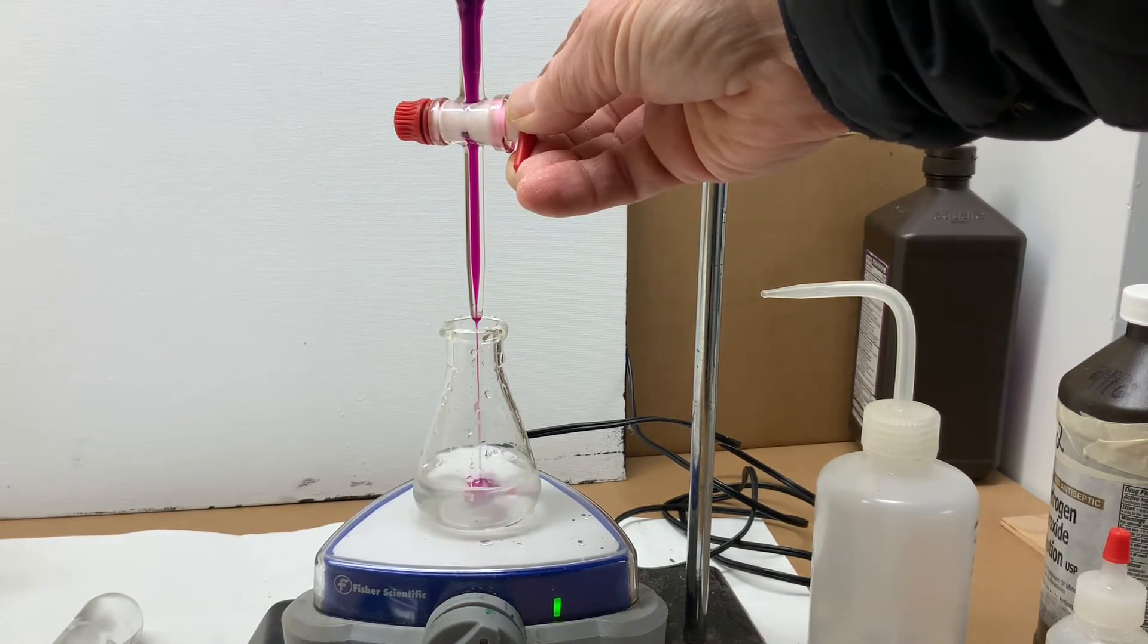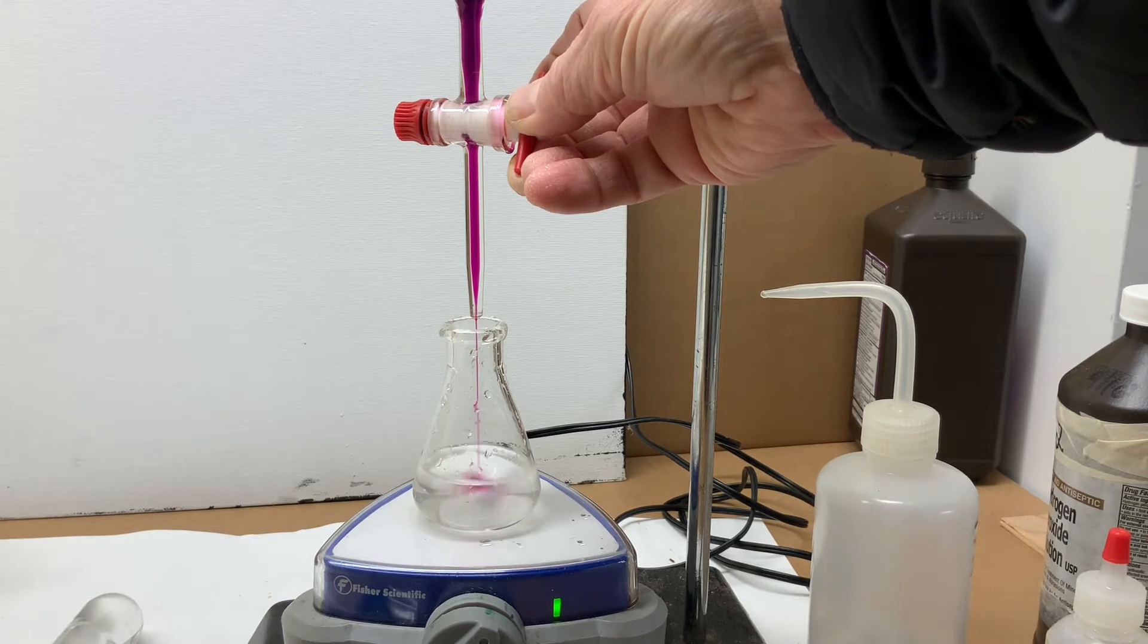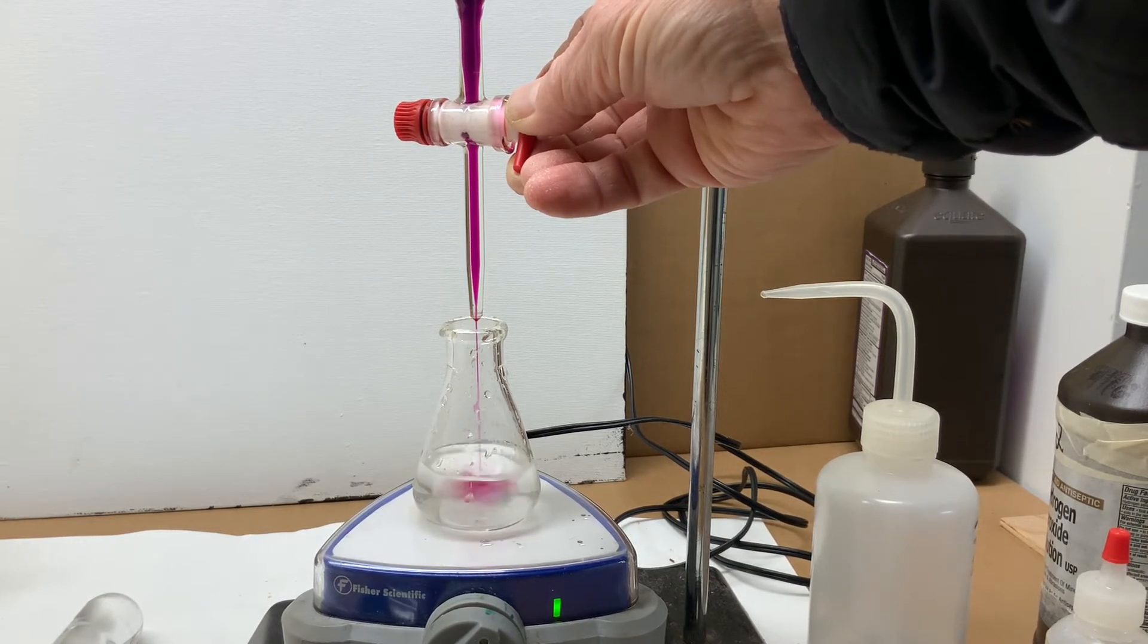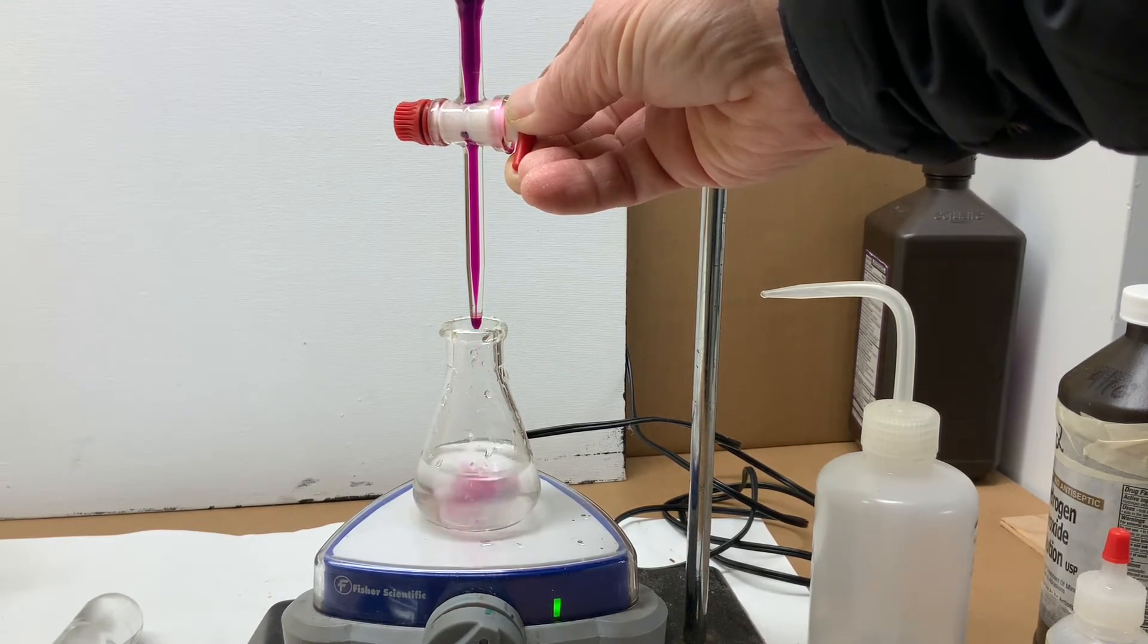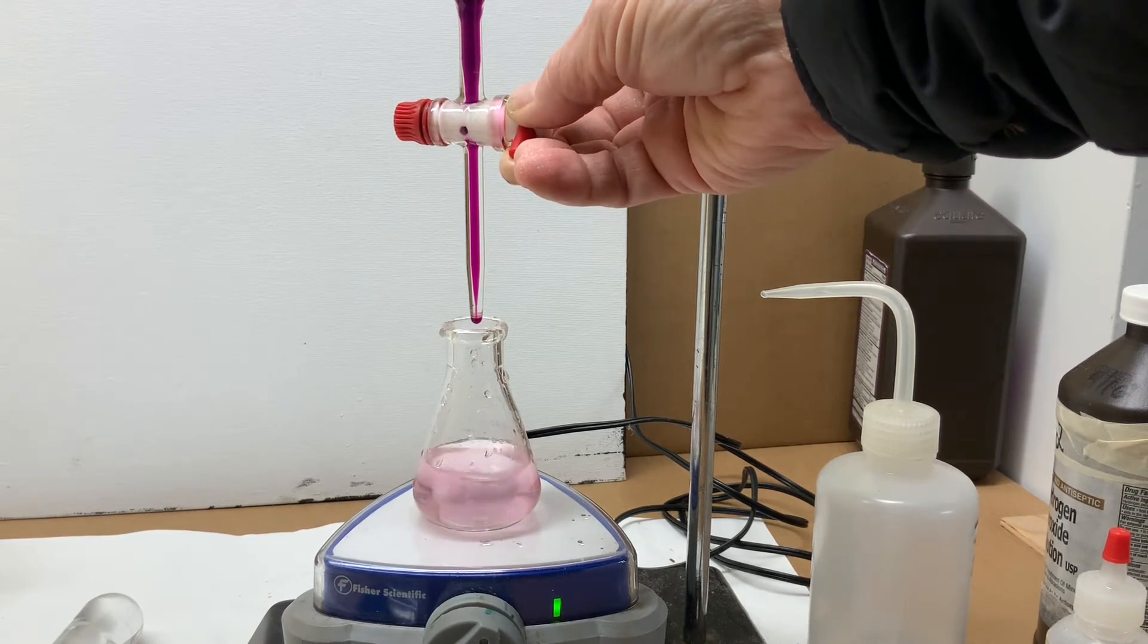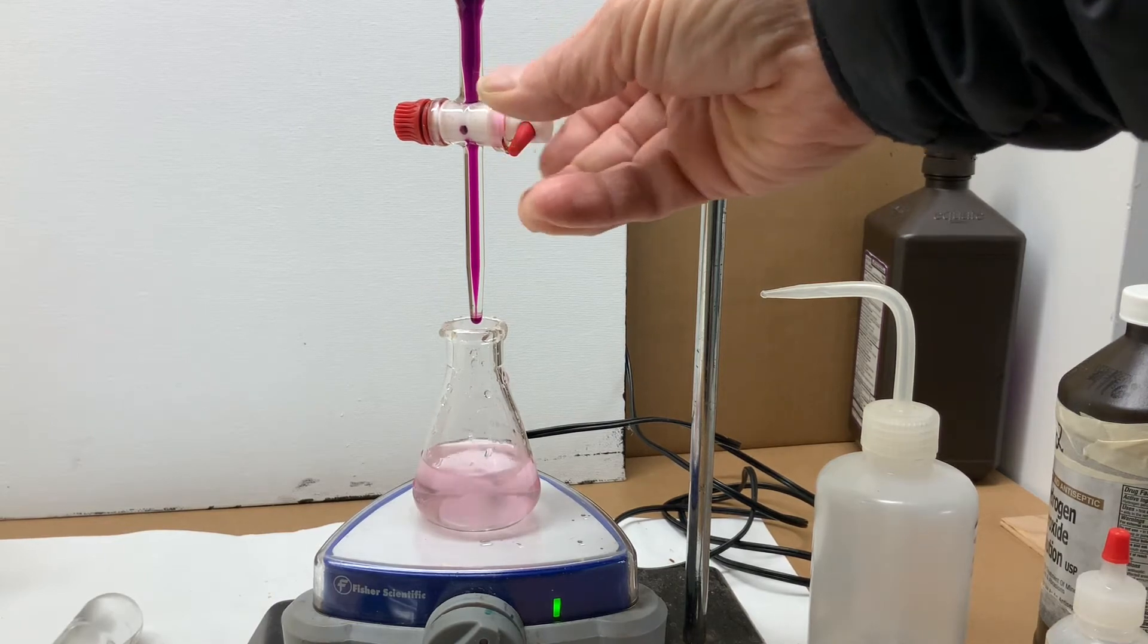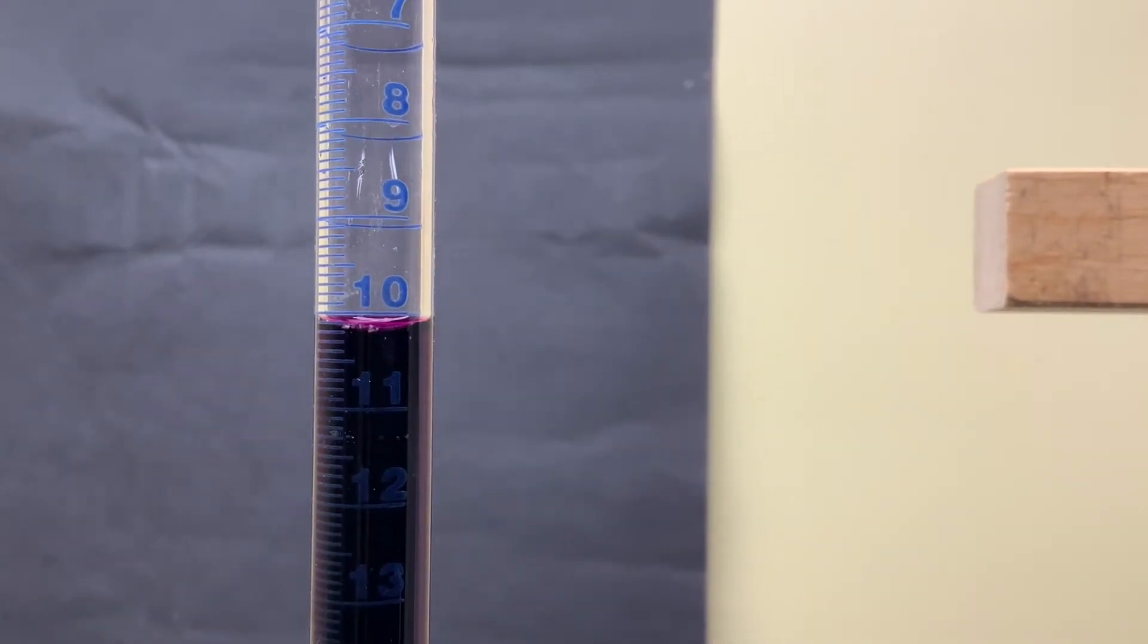Allow the permanganate to continue until all the iron ions are used up. When the last drop of permanganate can no longer react because the iron is depleted, the pink color will remain. This is the moment when stoichiometric quantities of iron(II) ions and permanganate match, and we take a second reading of the burette.